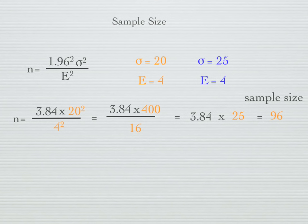Now let's redo the same problem again, but this time we'll use 25 as the standard deviation. We plug in the same numbers in the same spots. So we now have 3.84 times 625 divided by 16, which equals 3.84 times 39, which gives us a sample size of 150.